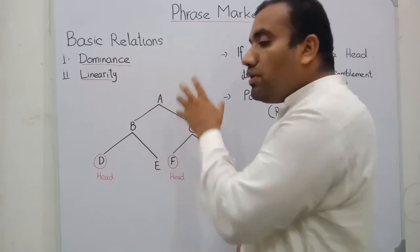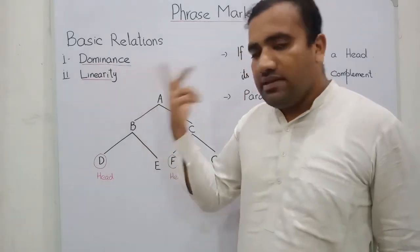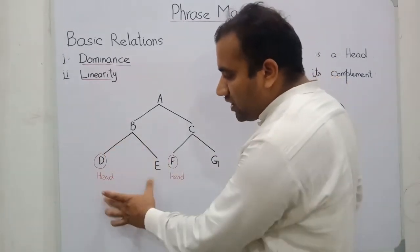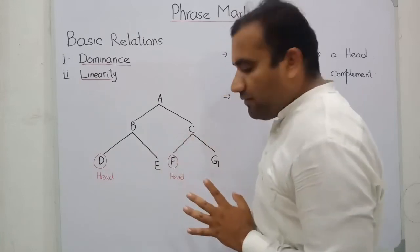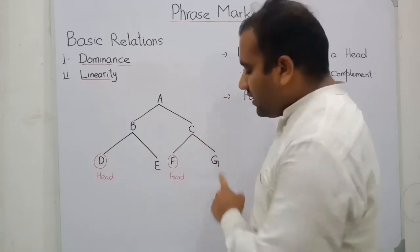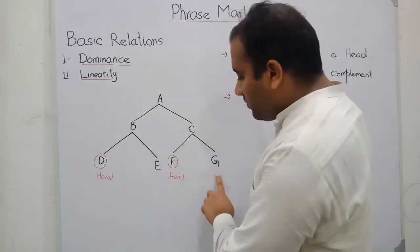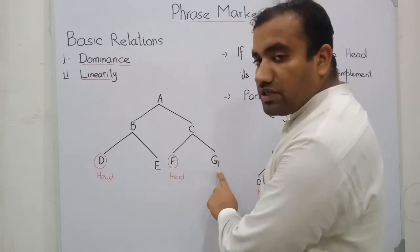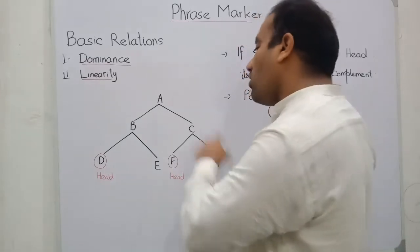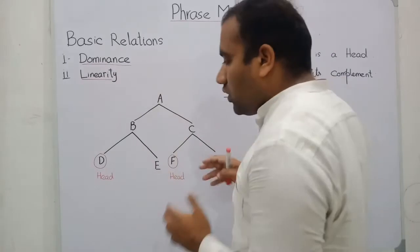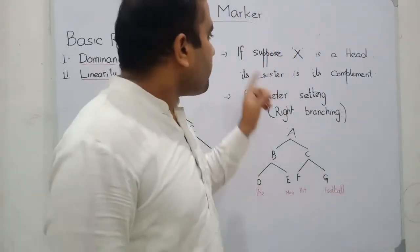We have fulfilled the two basic relations: dominance and linearity. Linearity means — if we take this frame — the head is at the left position and the complement is on the right side. In this diagram we have the right-side placement of the complement. If we suppose B is our head and C is at the right position, then A is dominating over all categories, meaning A is our sentence.